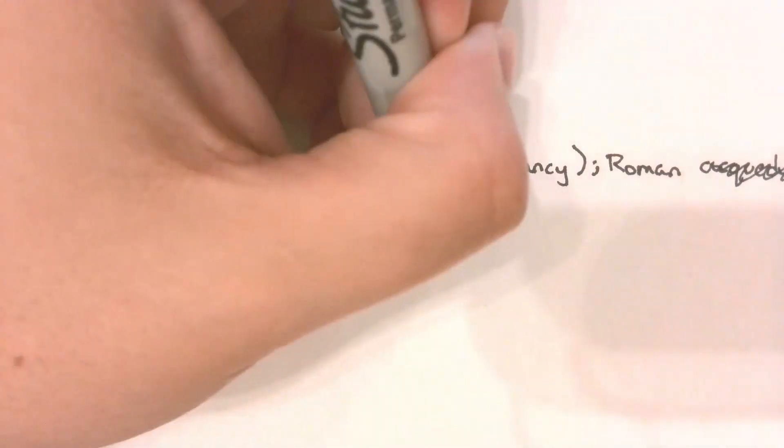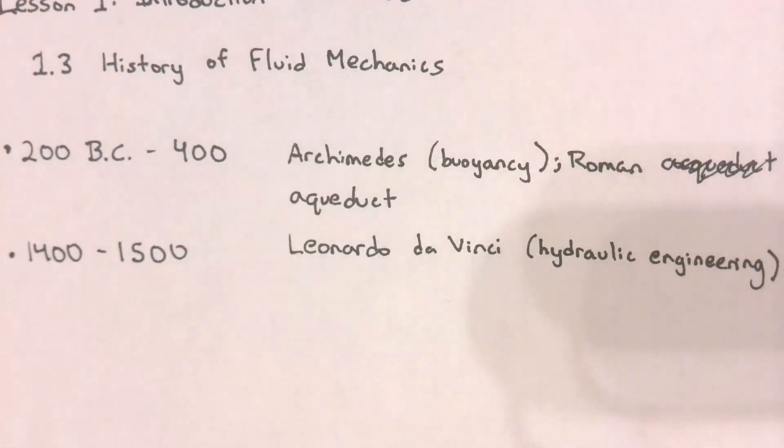After the year 400, there were no major developments in fluid mechanics for about a thousand years. Ships were still being made, land was still being irrigated, but nothing much was done during that time.